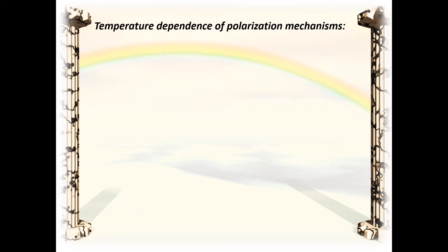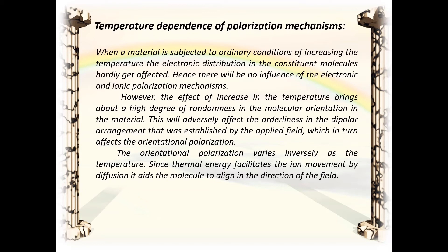When a material is subjected to increasing temperature, the electronic distribution in the constituent molecules is hardly affected, so there is no significant influence on electronic and ionic polarization mechanisms. However, increased temperature brings about a high degree of randomness in molecular orientation, adversely affecting the orderliness in the dipolar arrangement established by the applied field, and thus reducing orientational polarization. The orientational polarization varies inversely with temperature. Thermal energy also facilitates ion movement by diffusion and aids molecules in aligning in the direction of the field.